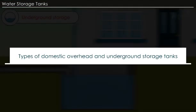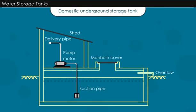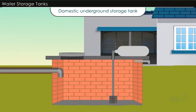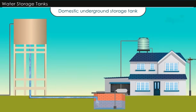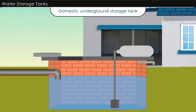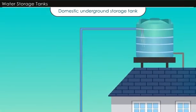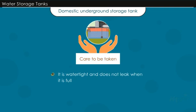We will now discuss the different types of domestic overhead and underground storage tanks used in domestic buildings. Typical details of rectangular underground water storage tanks are shown. Such a tank is made of RCC or brick masonry, filled from the municipal supply inlet, and covered from the top to avoid any contamination. The top cover may be provided with a manhole for inspection and cleaning purposes. A suitable pump is installed to lift water from the tank to the overhead tank. Care should be taken to construct an underground tank so that it is watertight and does not leak when full.